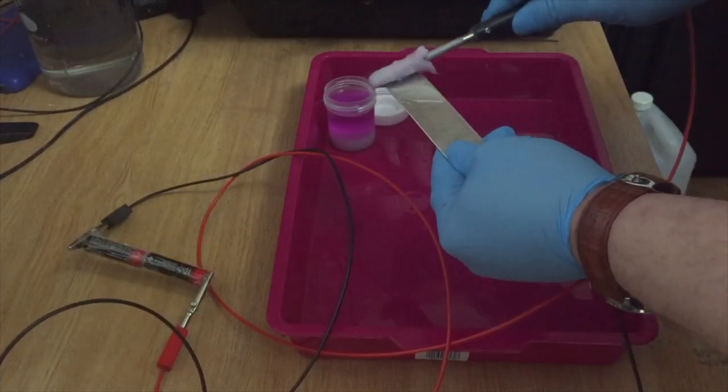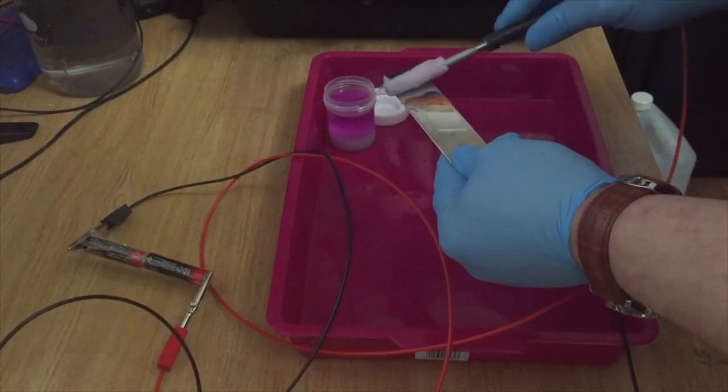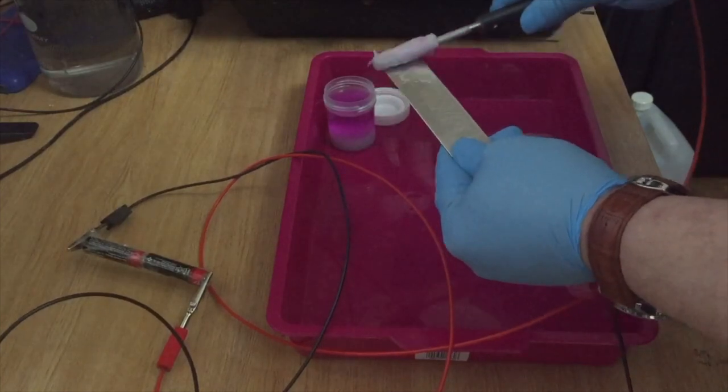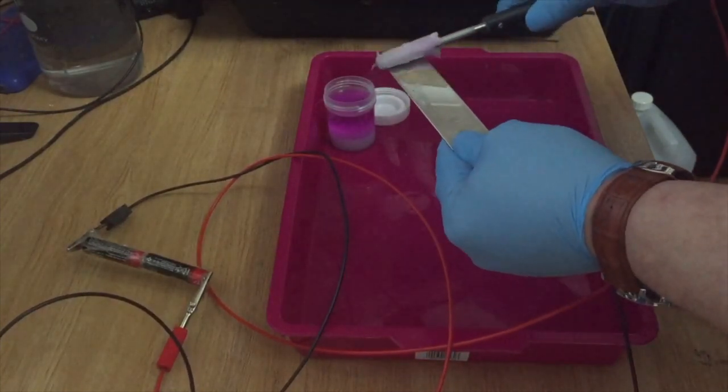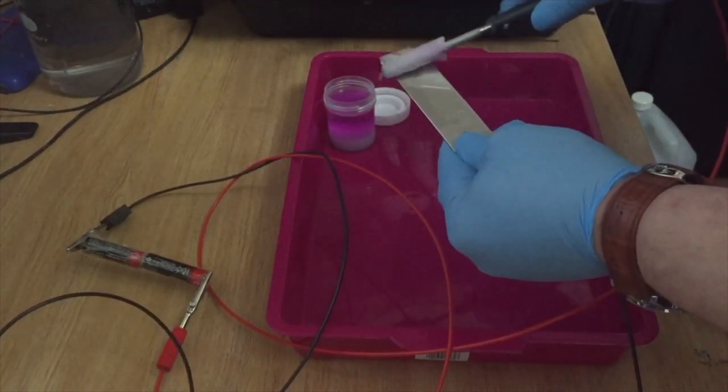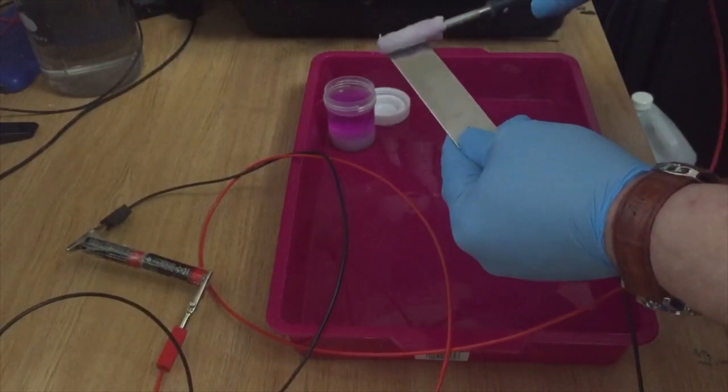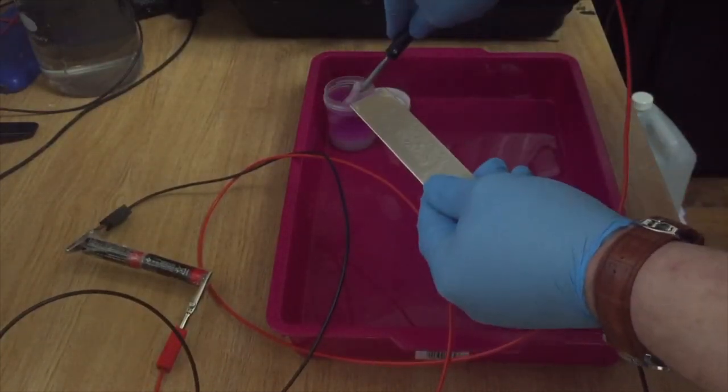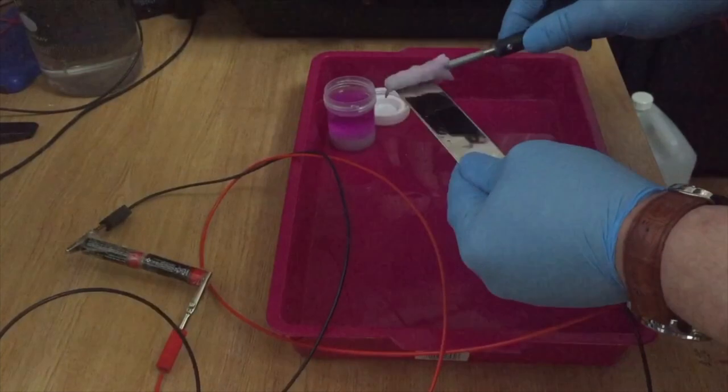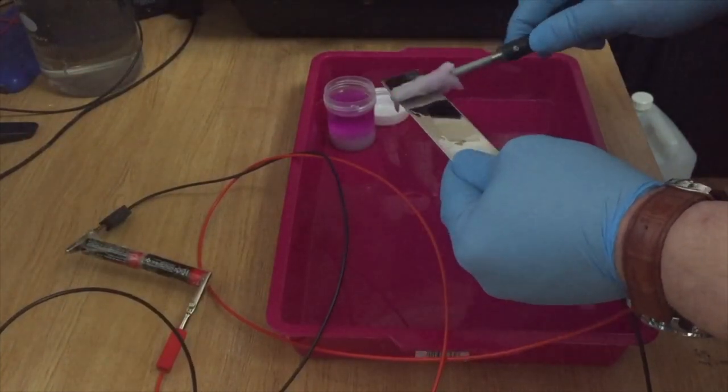Eight grams what I would normally use per liter. This one has maybe three, four grams, so this is why it plates also a little bit slower than usual. But I plated before with 3, 3.5 volts, it's not a problem, not a big issue.